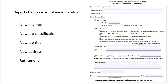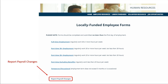One more thing — if there's ever any change in employment status, those changes must be reported as soon as possible. Changes such as new pay rate, new job classification, new job title, new address, retirement, or temporary and active status. You will find this form with the others on the Locally Funded Employee Forms page of the Georgia Cumberland Conference website.